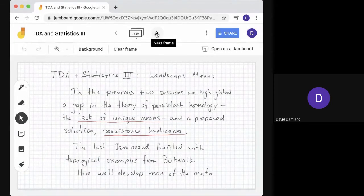Hi, this is the third Jamboard session on TDA and Statistics. We're going to be talking about landscape means, doing a little bit more of the math. In the previous two sessions, we highlighted a gap in the theory of persistent homology - the lack of a well-defined mean of diagrams - and the proposed solution, persistence landscapes, developed by Peter Bubenik.